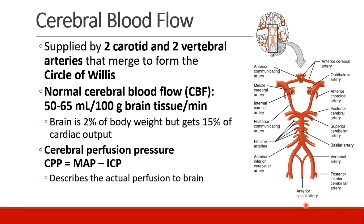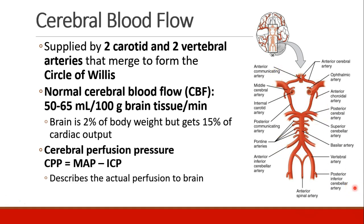The brain has blood flow supplied by two carotid and two vertebral arteries. This image shows the two carotid arteries anteriorly, the two vertebral arteries posteriorly, and they come together to form this structure known as the Circle of Willis.